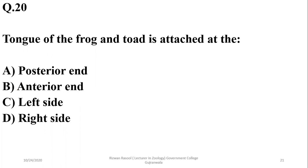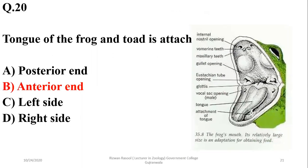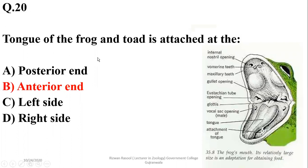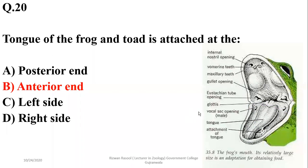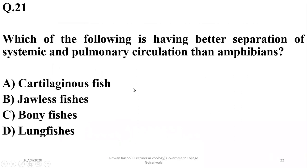The tongue of the frog and toad is attached at the base of the oral cavity on the anterior end. The right option is B — the tongue is free at the posterior end while attached on the anterior side.